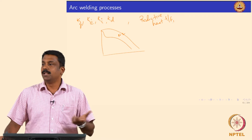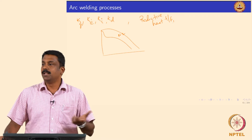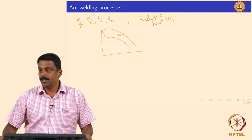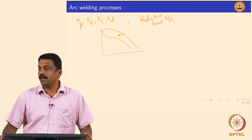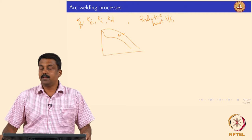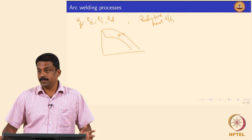The arc looks bluish because the maximum intensity comes from wavelengths ranging from 400 to 500 nanometers. We also looked at the convective heat transfer — how convective heat transfer can effectively move heat from one point to another in an arc. This is an important heat transfer mechanism especially if you use low-density gases, for example helium.